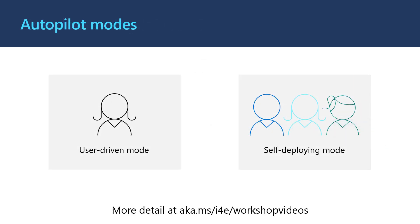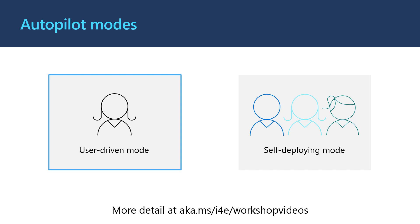Autopilot can be used in two different modes: user-driven mode and self-deploying mode. User-driven mode is ideal for one-to-one scenarios where one student or teacher will use the device. In this mode, the user must enter the username and password when unboxing the device to start Autopilot provisioning. Self-deploying mode is ideal for shared devices with more than one user or kiosks. In this mode, the device only needs to be connected to a network to start Autopilot provisioning. This video is going to focus on user-driven mode, but if you want to know more about Autopilot, check out our workshop video playlist on our page, or go to aka.ms/i4e/workshop-videos.